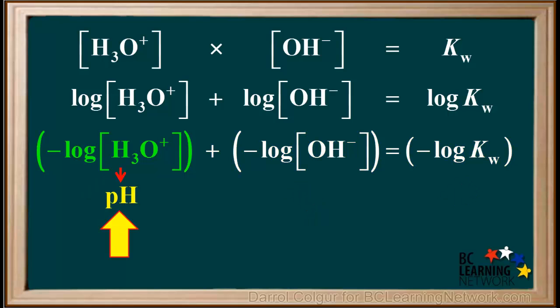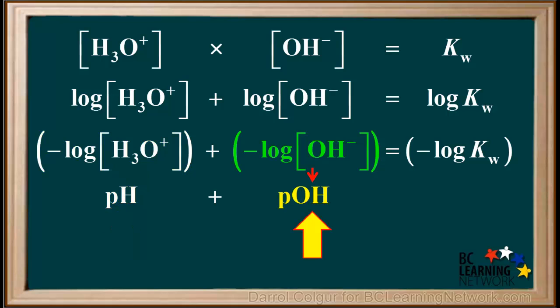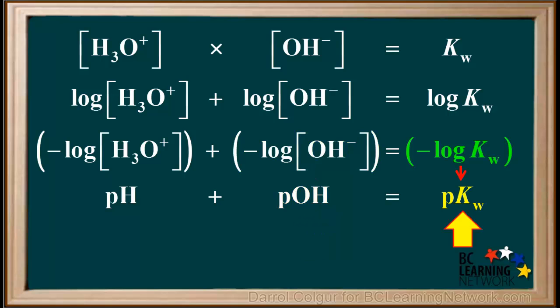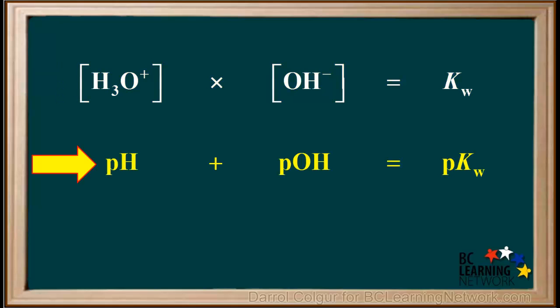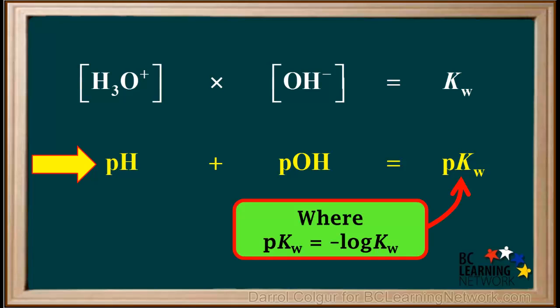The negative log of the hydronium ion concentration is the pH. The negative log of the hydroxide ion concentration is the pOH. And the negative log of Kw is equal to something called pKw. So we have two important equations: the concentration of hydronium times the concentration of hydroxide is equal to Kw, and pH plus pOH is equal to pKw, where pKw is defined as the negative log of Kw.